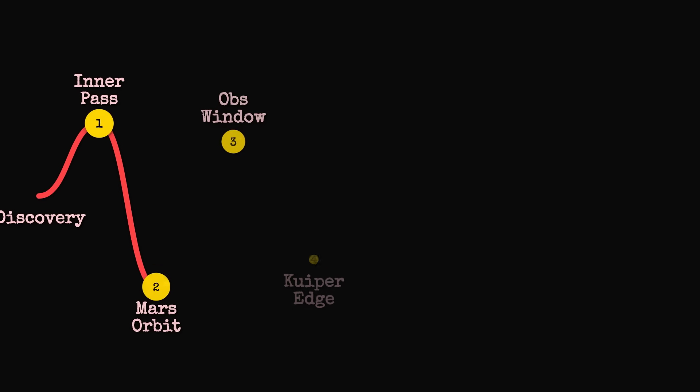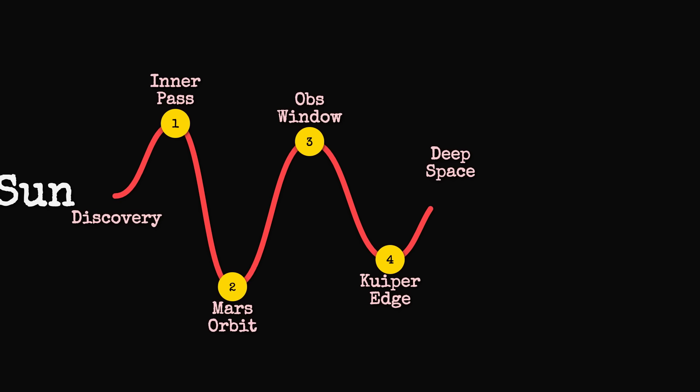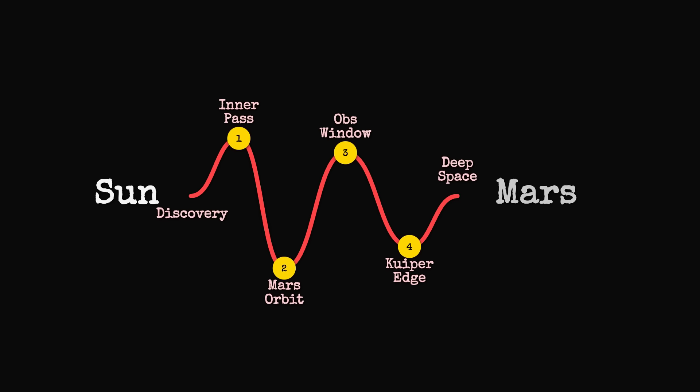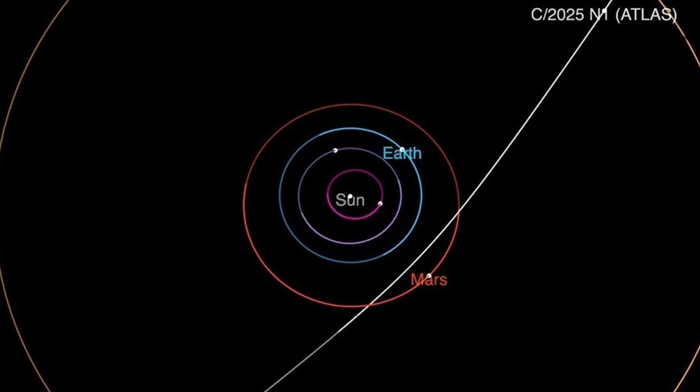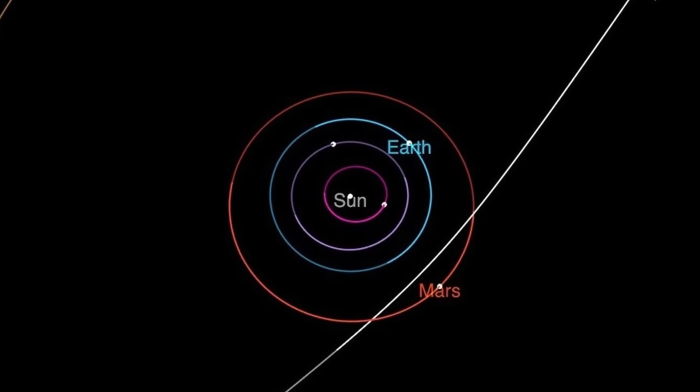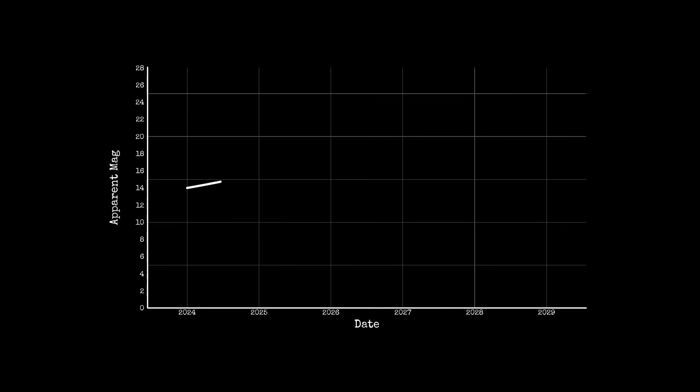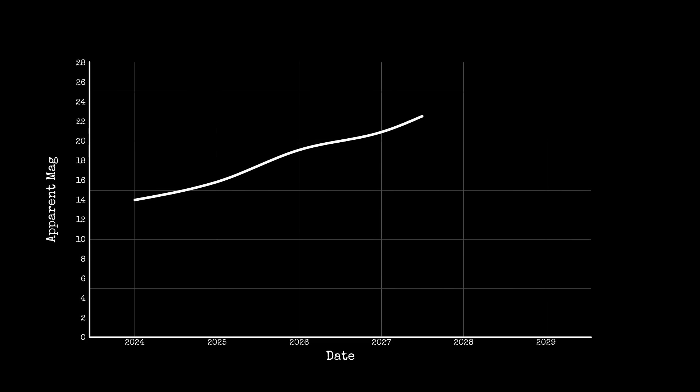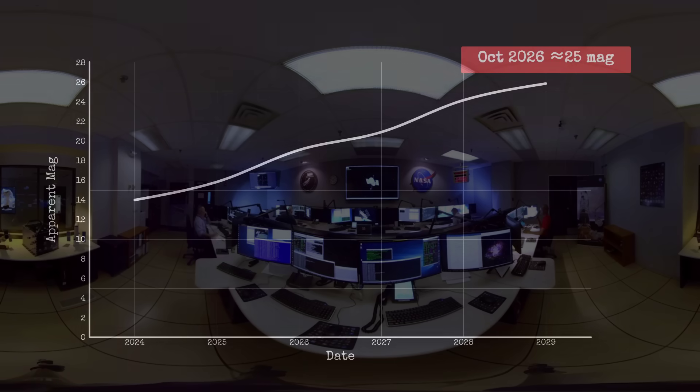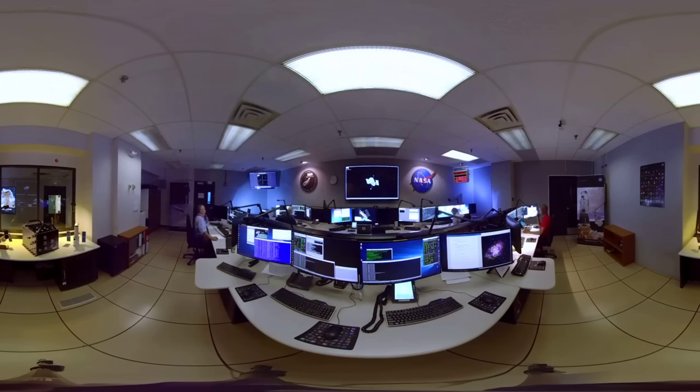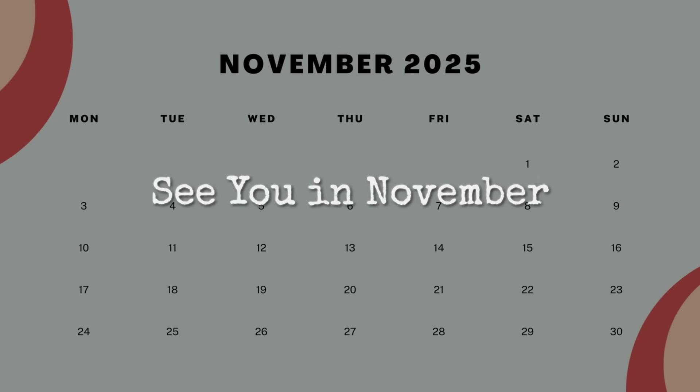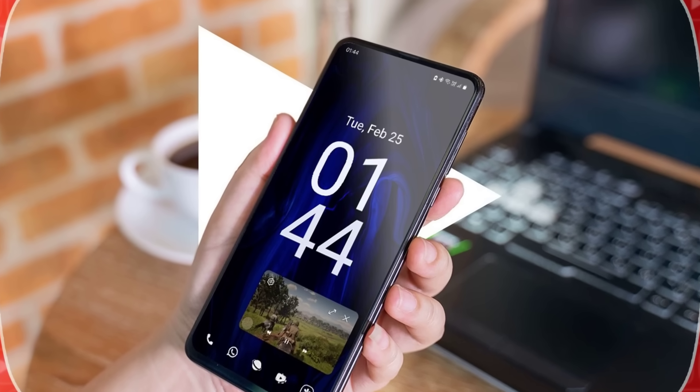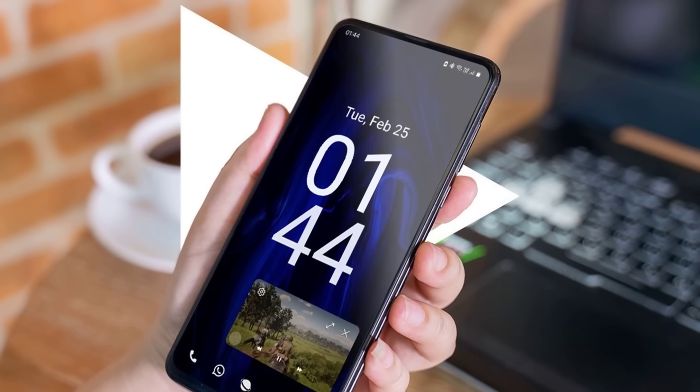After that, 3I/Atlas will continue outward, crossing Mars' orbit again in early 2026 and eventually leaving the inner solar system entirely. By mid-2026, it will be beyond Jupiter's orbit and fading from view. I'll be monitoring all available data and will post updates as soon as we get new observations in late November. Make sure you're subscribed so you don't miss the follow-up coverage.